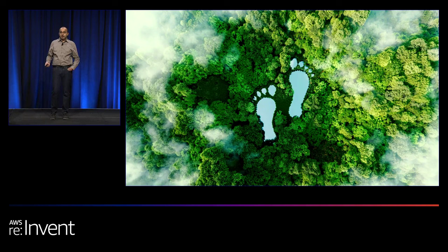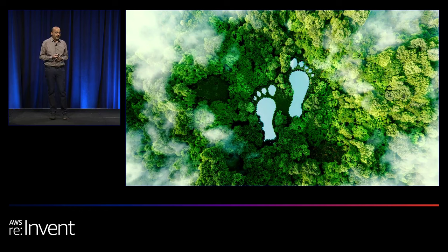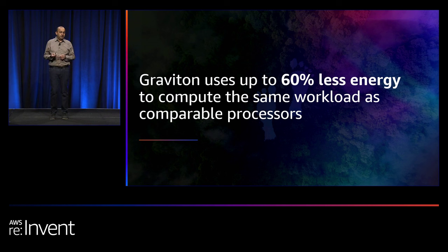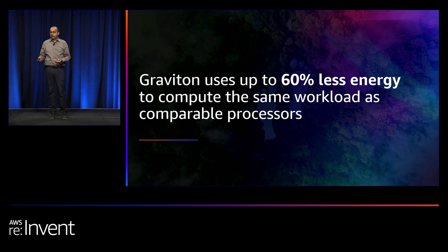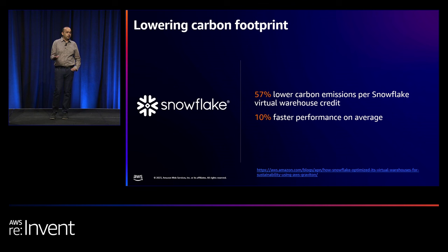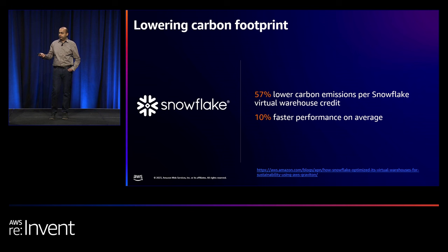Sustainability is a key pillar many organizations focus on today, and Graviton plays an important role in lowering carbon footprint. Graviton uses up to 60% less energy to compute the same workload as comparable processors. Snowflake, for example, lowered their carbon emissions per Snowflake virtual warehouse credit by 57% when transitioning to Graviton-based instances, while also offering 10% faster performance on average to their customers.